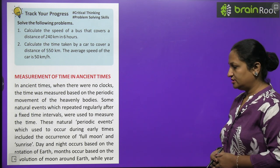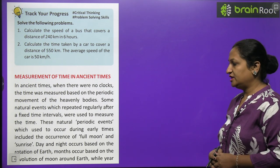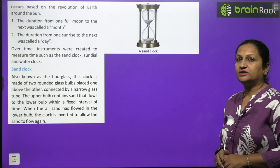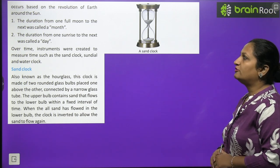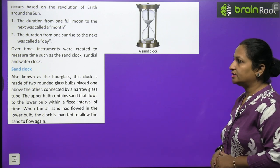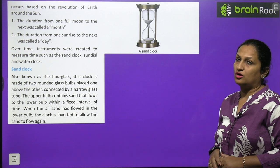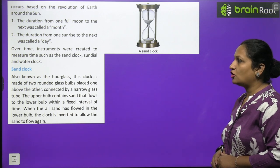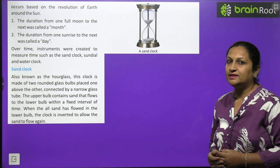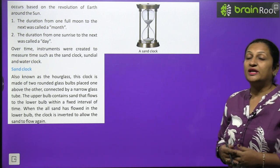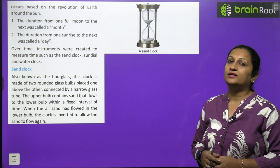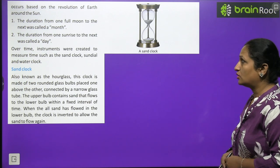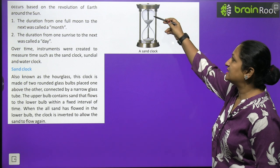Day and night occur based on the rotation of the Earth. Months occur based on the revolution of the Moon around the Earth, while a year occurs based on the revolution of the Earth around the Sun. The duration from one full moon to the next was called a month, and the duration from one sunrise to another sunrise was called a day. Over time, instruments were created to measure time, such as the sand clock, sundial, and water clock.